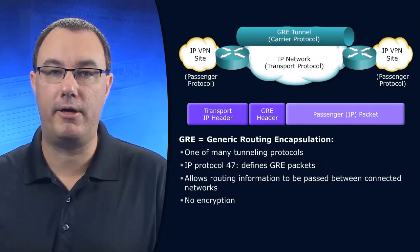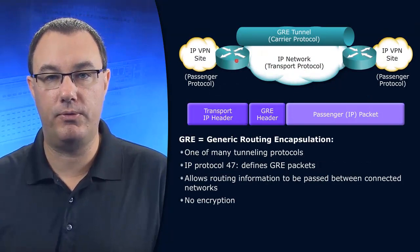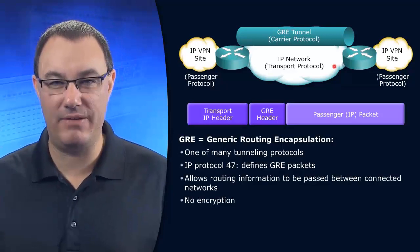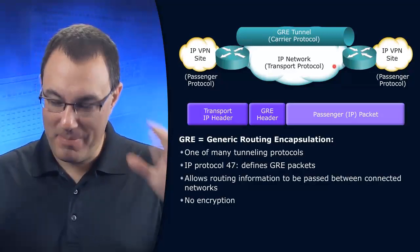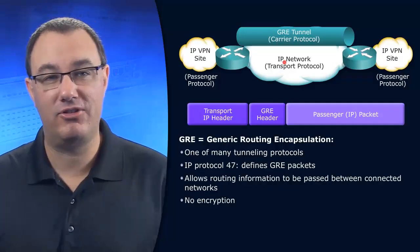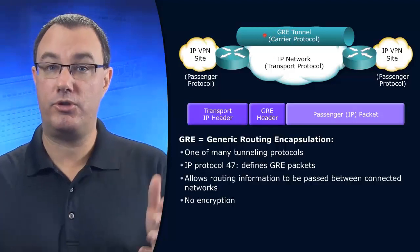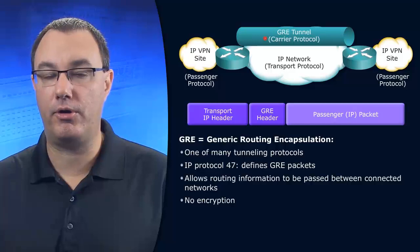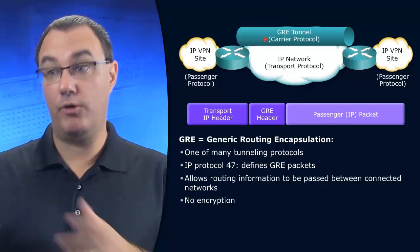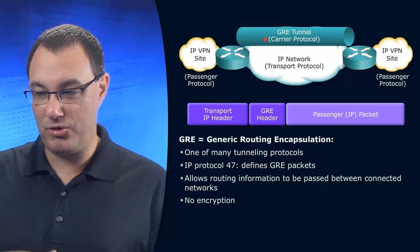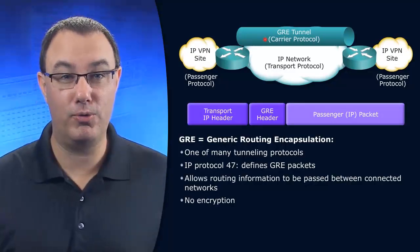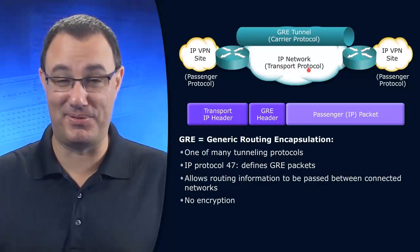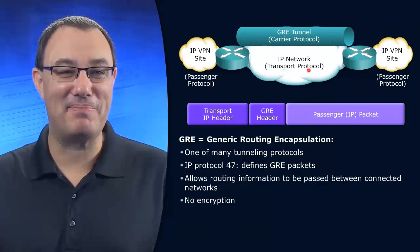If we were to look at a topology such as this, we've got two sites, and I just want connectivity between these two sites — package up my data, I want it encapsulated, sent across. I might choose a GRE tunnel to do that. That would be our carrier protocol, like a carrier pigeon is the thing we use to send messages through the air, which would be our transport protocol — if we're stretching the carrier pigeon analogy.